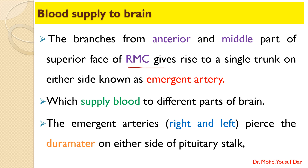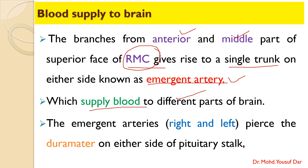Small branches arise from the anterior and middle part of the superior face of the RMC. These branches unite to form a single trunk on either side, known as the emergent artery. The emergent artery plays a very important role in supplying blood to different parts of the brain. The right and left emergent arteries pierce the dura mater on either side of the pituitary stalk.